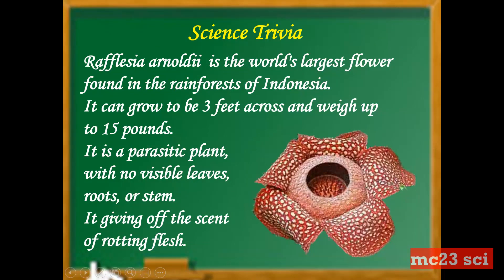For the science trivia, Rafflesia arnoldii is the world's largest flower, found in the rainforest in Indonesia. It can grow to be 3 feet across and weigh up to 15 pounds. It is a parasitic plant because it has no visible leaves, roots, and stems, and it gives off the scent of rotting flesh.